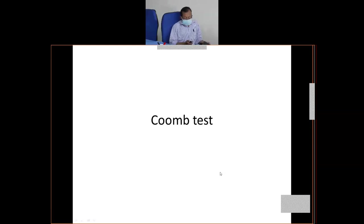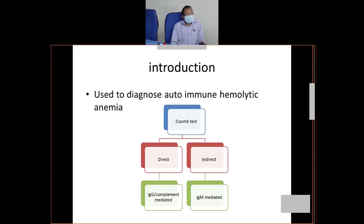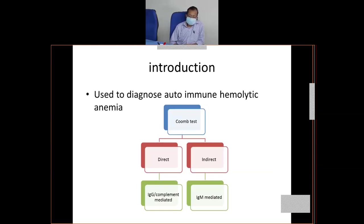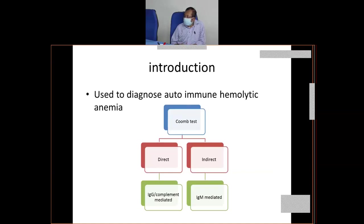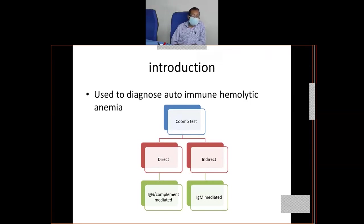Now I will discuss the Coombs test. Coombs test is used to diagnose autoimmune hemolytic anemia. You will get short notes in the Coombs test in the exam. There are two types of Coombs test — direct Coombs test and indirect Coombs test. Direct Coombs test is against IgG and complement — these are the hot antibodies. Indirect is basically IgM mediated — these are the cold antibodies.